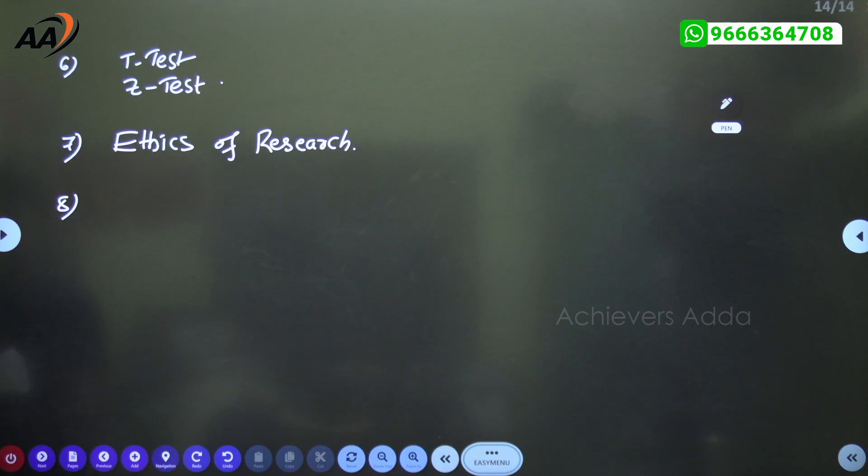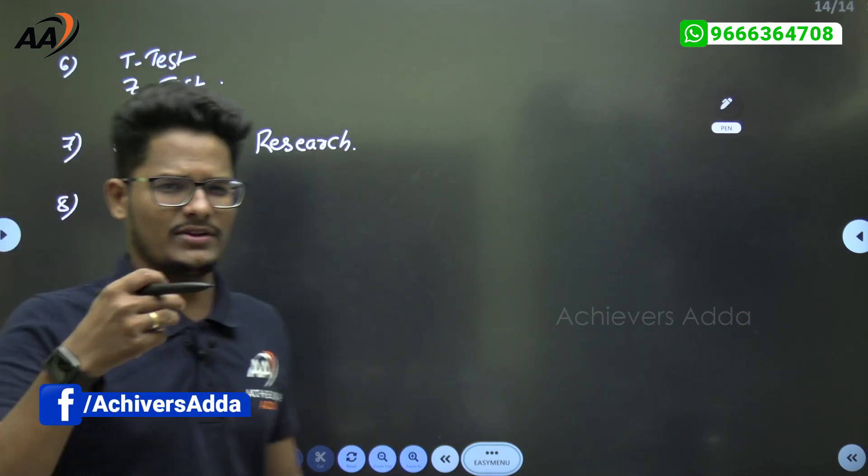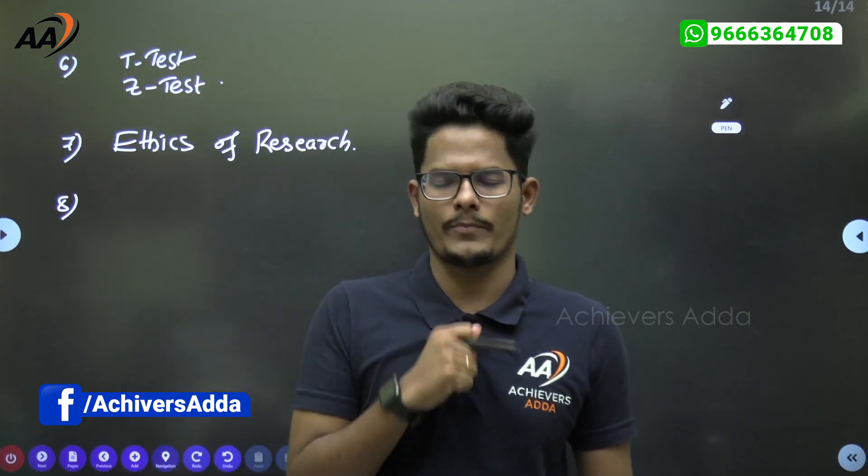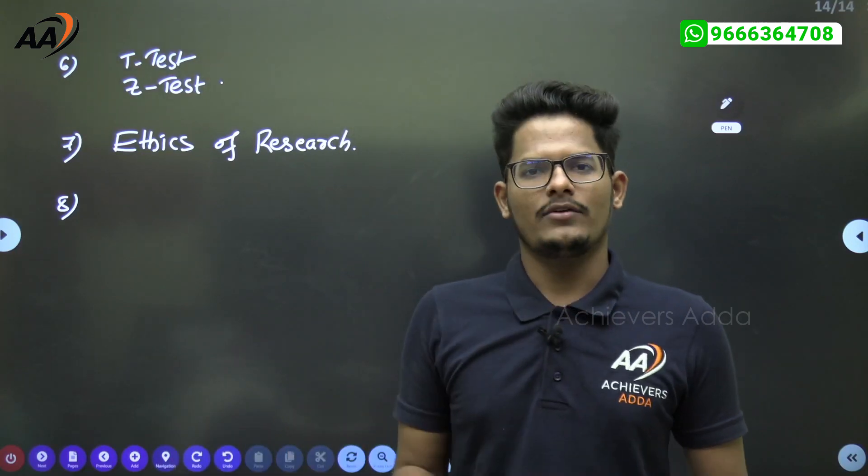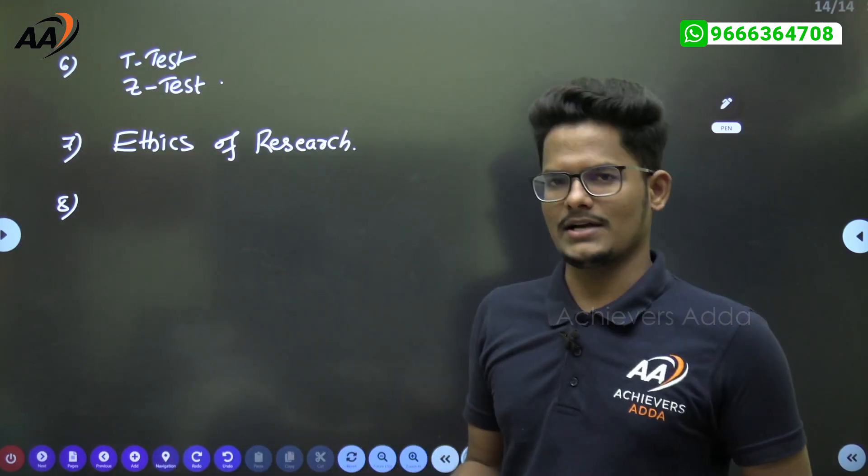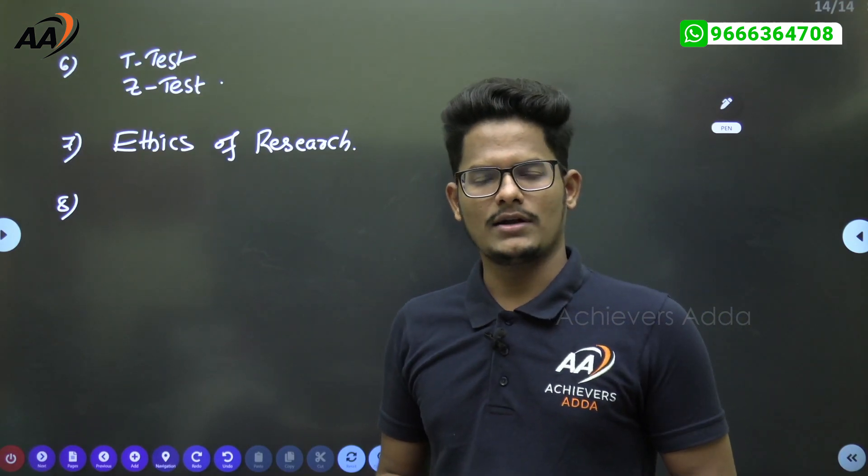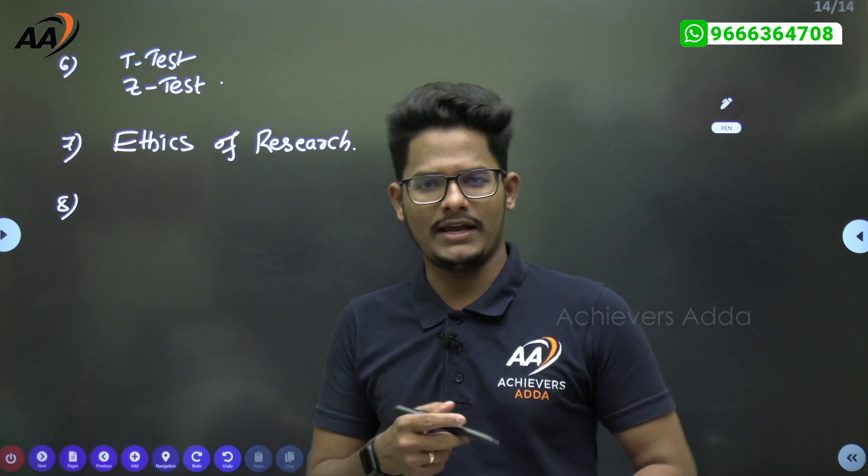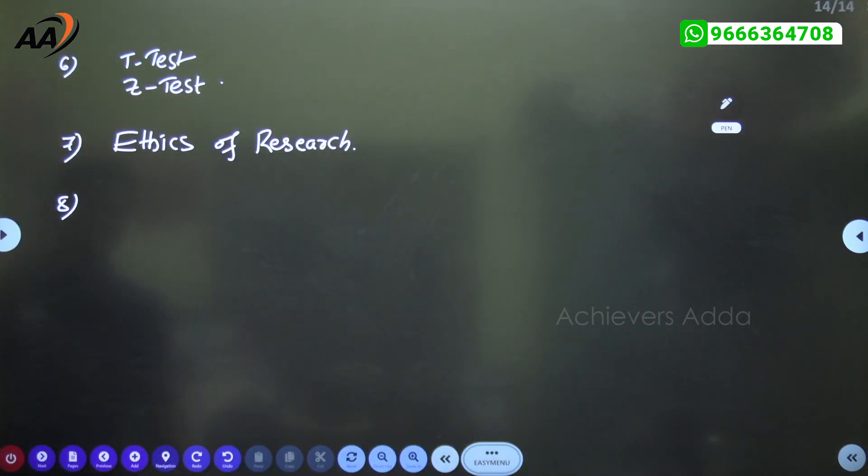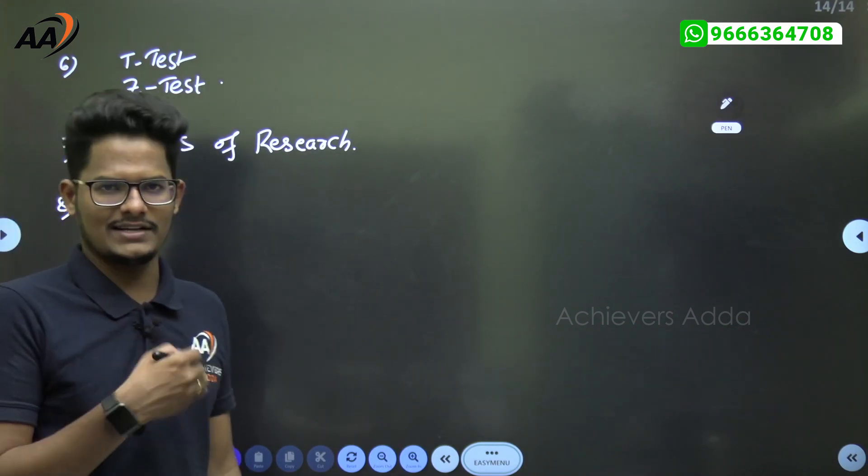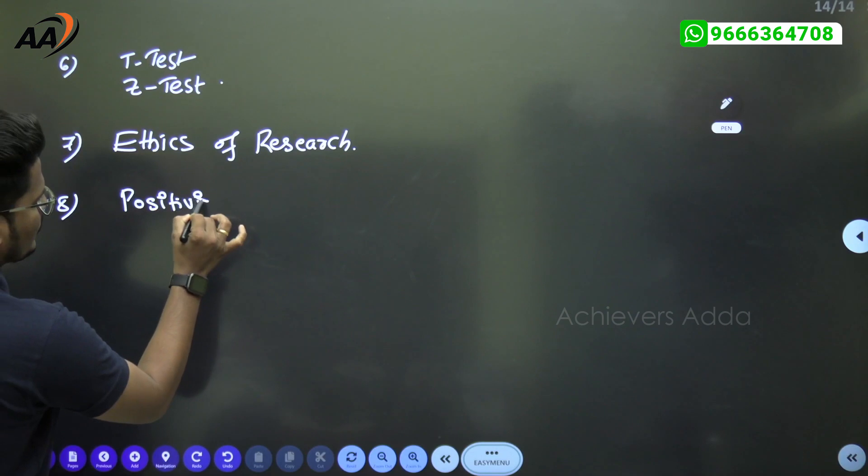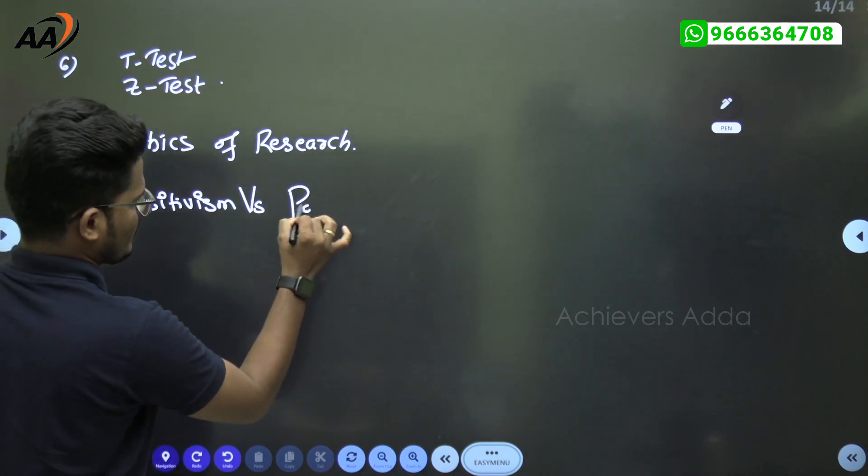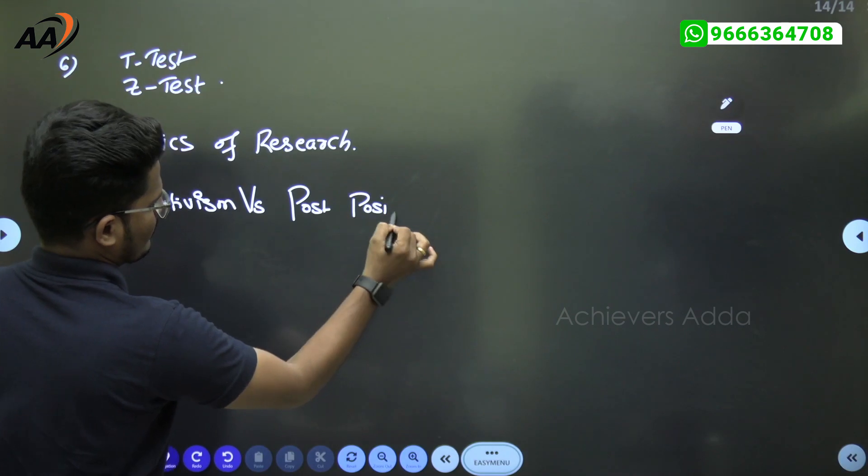Even this ethics in research can be asked like which are vulnerable to research - that will be DDR: data collection, data interpretation and reporting work. But that question can be asked in a different way by modifying the way of asking. So the exact question students may not remember, that's why we are writing the topic. Here, positivism versus post-positivism related question.